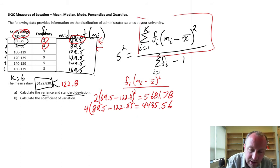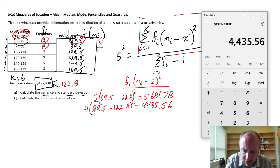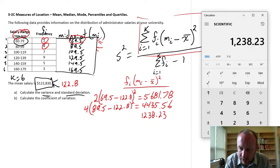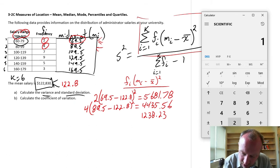So I'm going to skip through. I'm not going to write out in detail each of the next steps. So the next one, I'm working with the frequency. The midpoint, sorry, is 109.5 minus 122.8. And I square that, times that by my frequency is 7. So 1238.23.